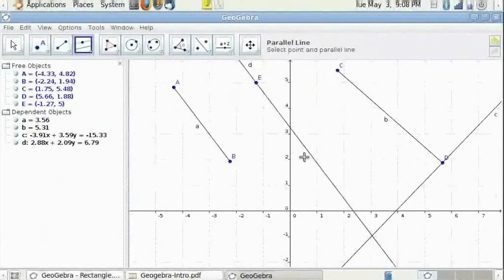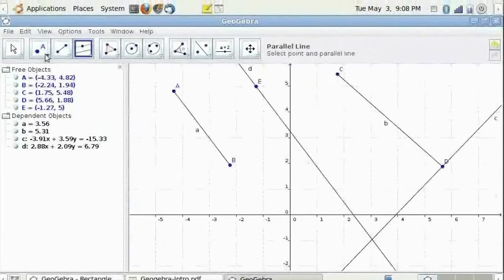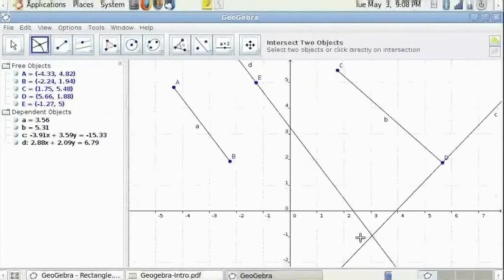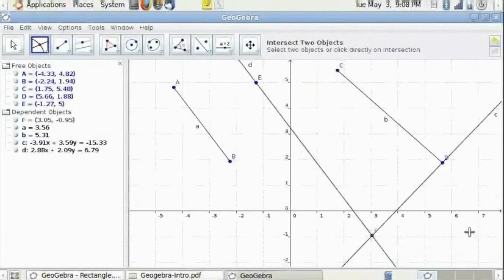Now you can find the point of intersection of two objects if you go to this tool here and click on intersect two objects. Now when you move your mouse over the intersection, both the objects get highlighted. At that time click. You will get the intersection of the two objects.